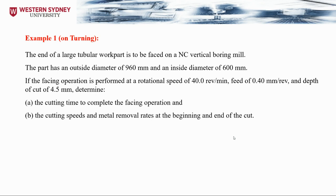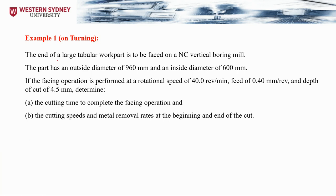Let's look at example number 1, which is on the turning operation. In this example, we have the end of a large tubular work part — a hollow tube shape. It is to be faced using a numerical control vertical boring mill machine. The part has an outside diameter of 960 millimeters while the inside diameter is 600 millimeters.